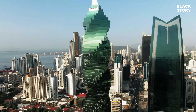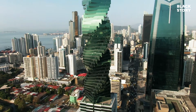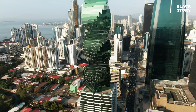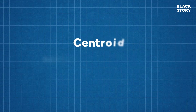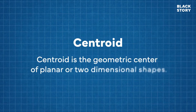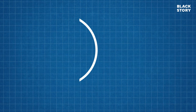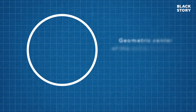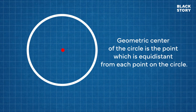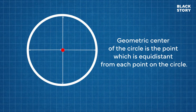Before looking into the center of gravity, we have to understand what is centroid. Centroid is the geometric center of planar or two-dimensional shapes. Let's look at some examples. First, let's take a circle. Anybody can easily tell that the geometric center of the circle is the point which is equidistant from each point on the circle.